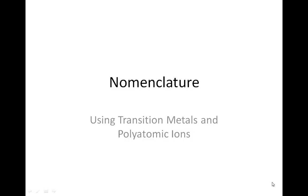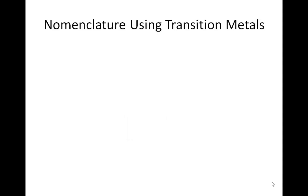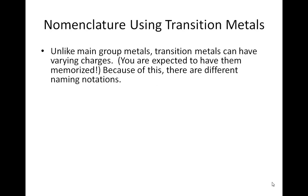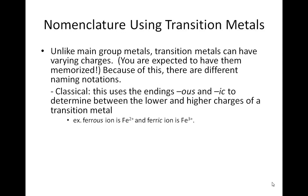Here we go with nomenclature using transition metals and polyatomic ions. First, using transition metals. Unlike main group metals, transition metals have varying charges. You have a list of these — the ones you're supposed to have memorized. And because of these varying charges, there are different naming notations.